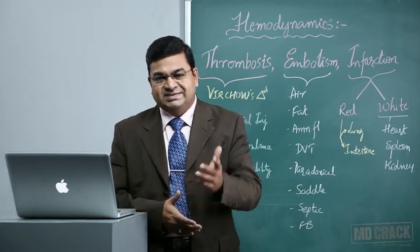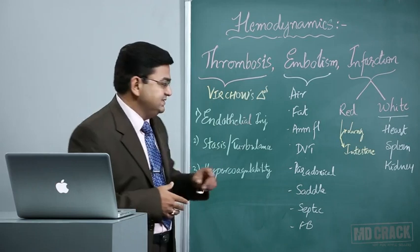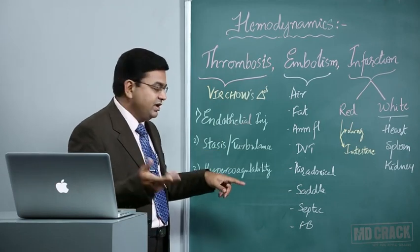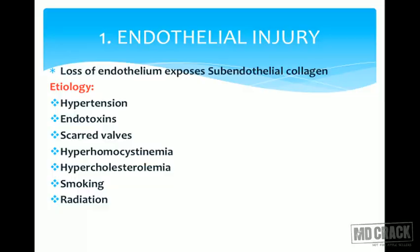Virchow's triad of thrombus formation consists of three things: endothelial cell injury, stasis or turbulence of blood, and hypercoagulability of the blood. The most important and common causes for endothelial cell injury are hypertension, endotoxins, scarred valves as seen in rheumatic heart disease, hyperhomocysteinemia, hypercholesterolemia, smoking, and radiation. All these cause loss of endothelium, exposing sub-endothelial collagen which is highly thrombogenic.